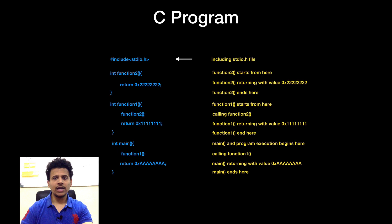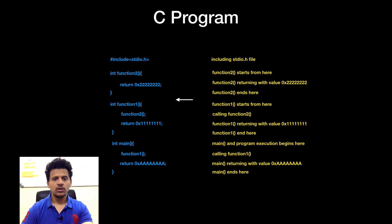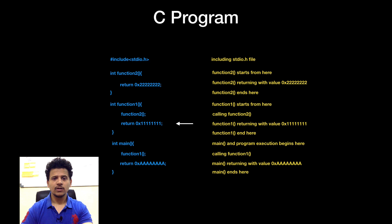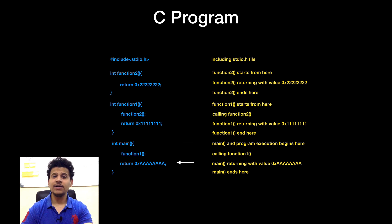First, we are including stdio.h. After that, we are directly going to main. Main is calling function 1, then we are into function 1. Function 1 is calling function 2. After that, we are into function 2. Function 2 is returning with the 2s. Function 2 is ending here. Function 1 is returning with the 1s. Function 1 is ending here. After that, we return to main. Main is returning with 0, and main ends here.